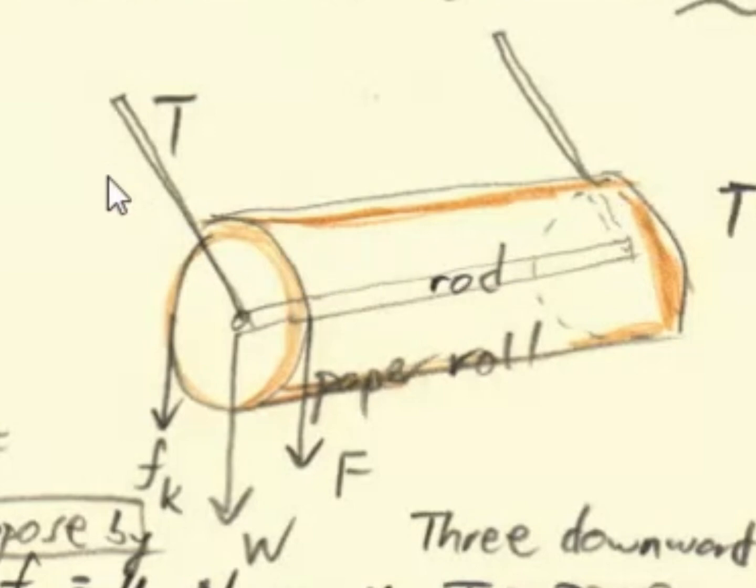Part A of this problem is to find the tension force on the bracket. We have here illustrated the forces acting on this diagram. We have the applied force F,